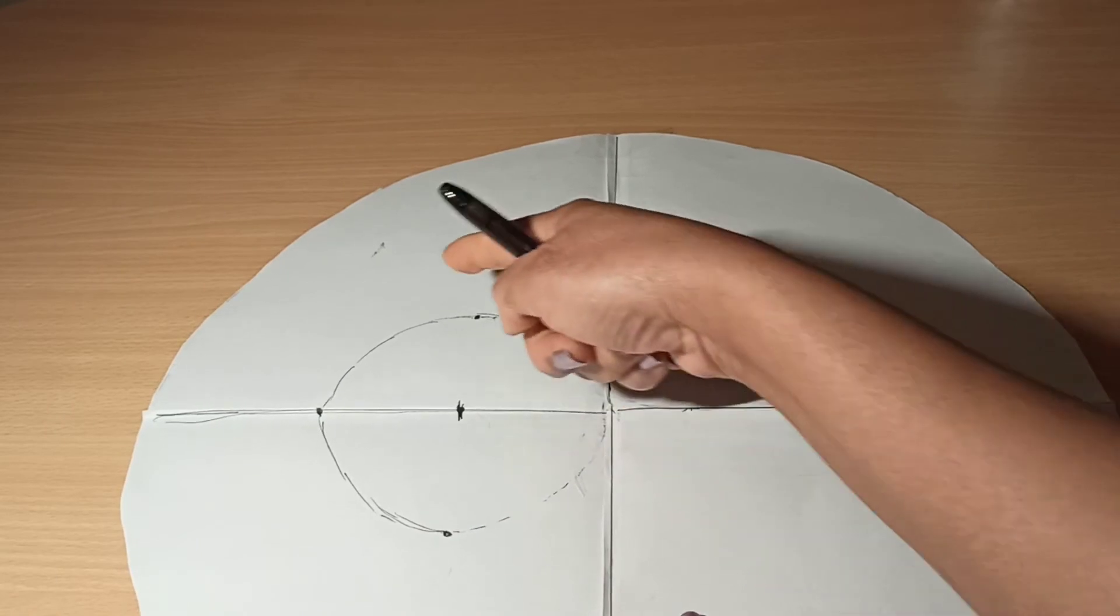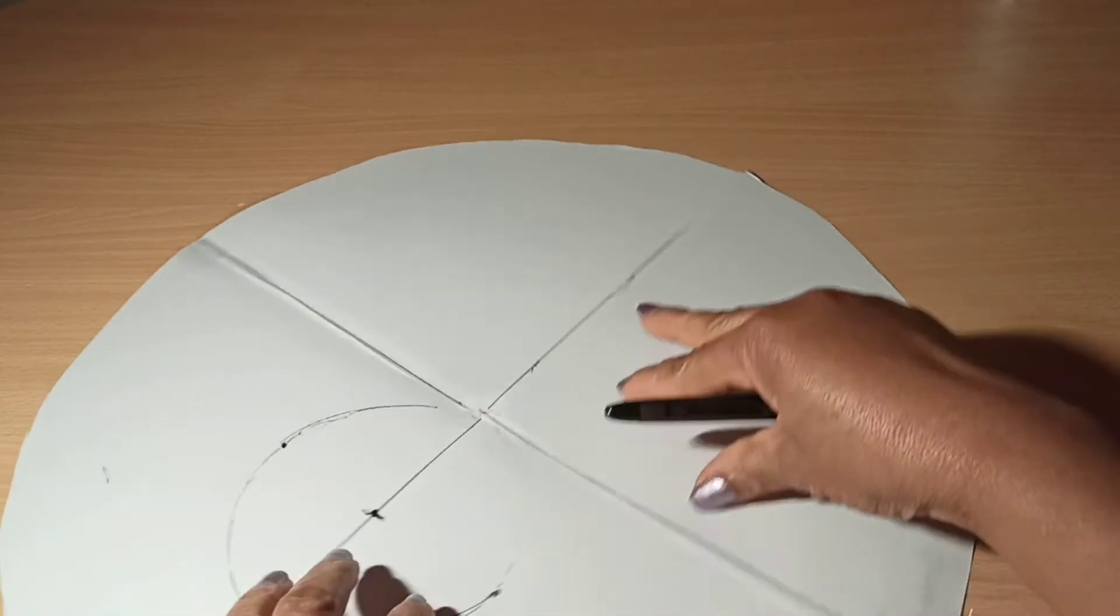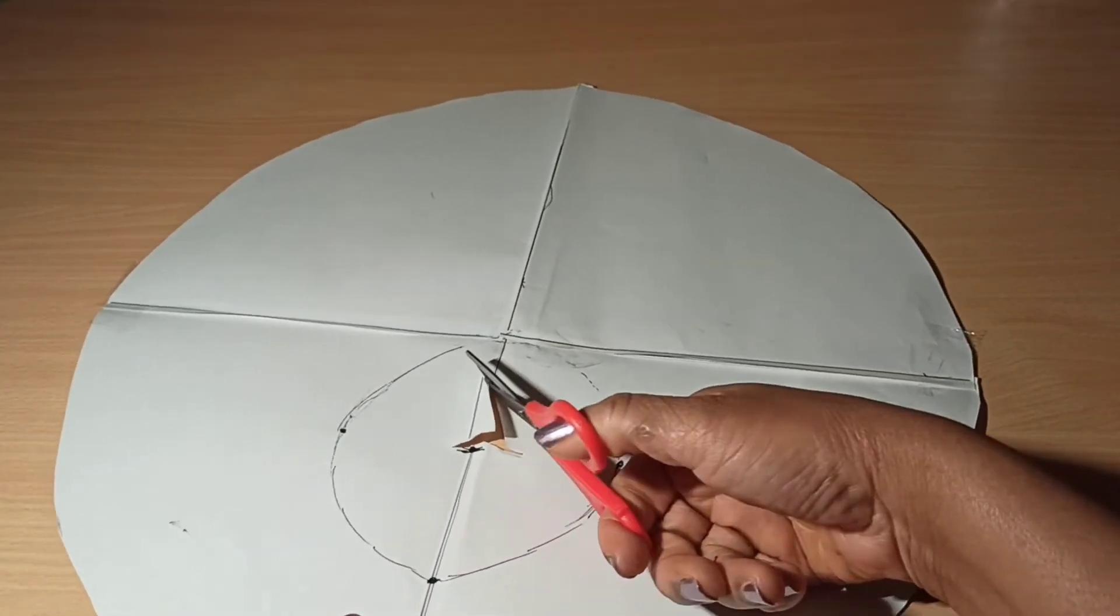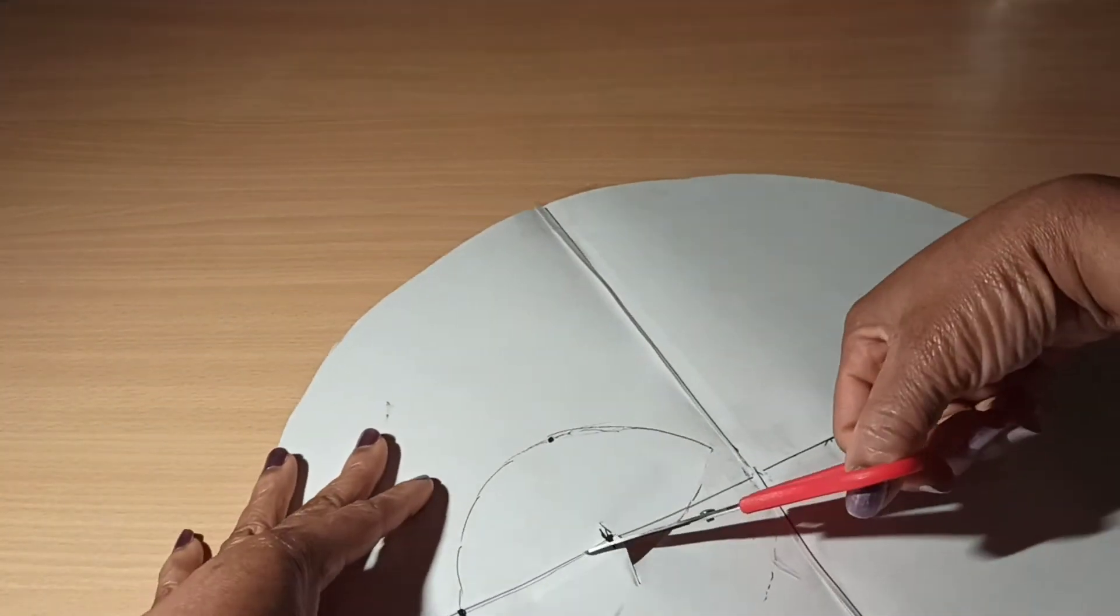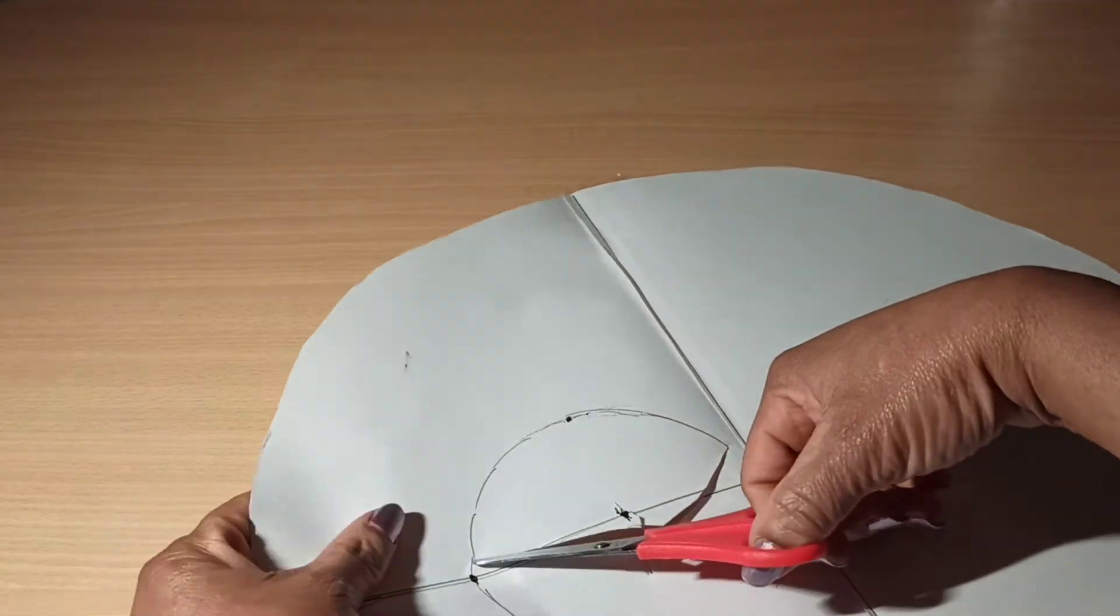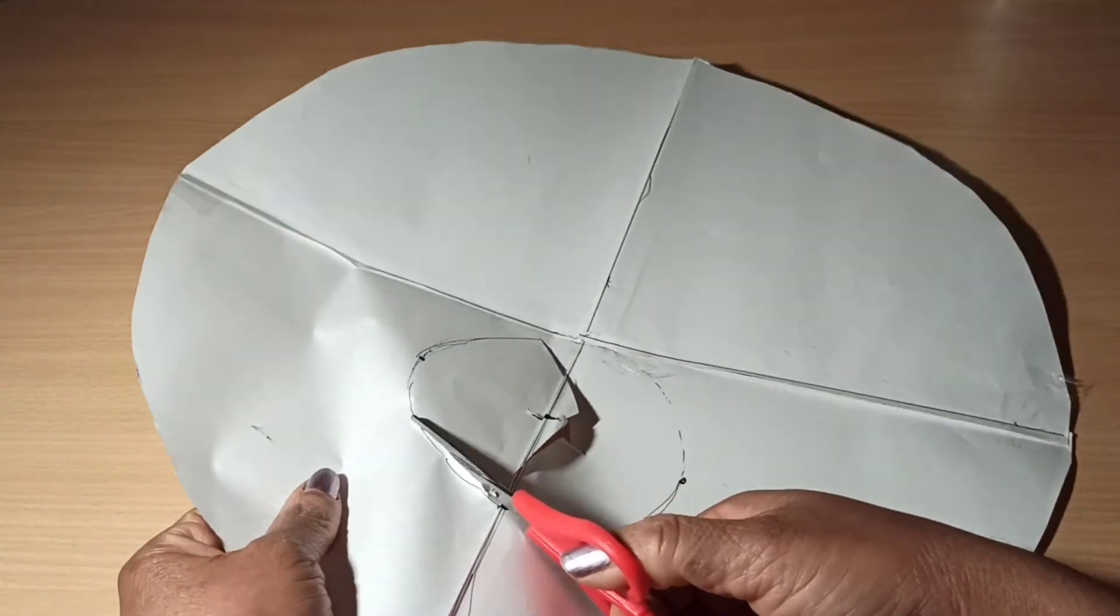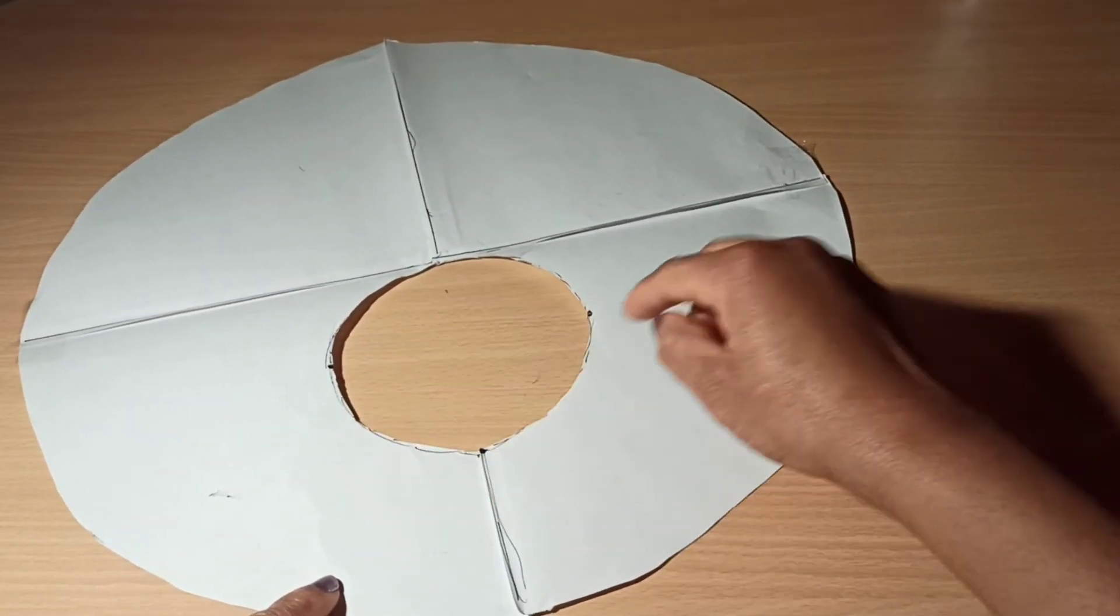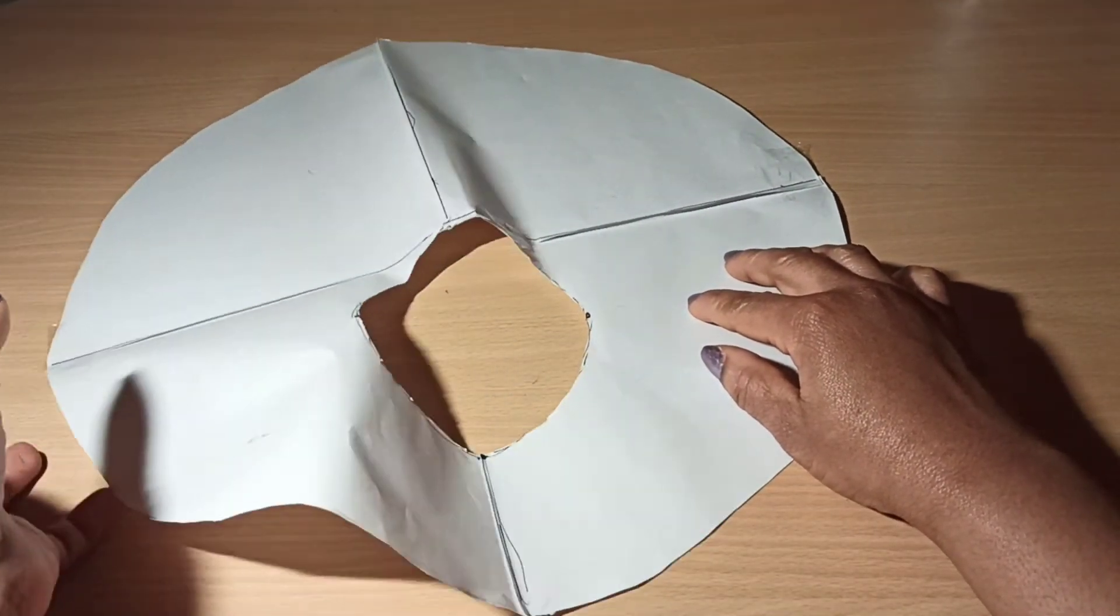I'm gonna go ahead now and cut that circle. First of all, you want to snip it in the middle and start cutting. Be very careful when you're cutting. Circles can be hard to cut, you have to be very patient. Once you finish cutting, your sleeve pattern should look like this.